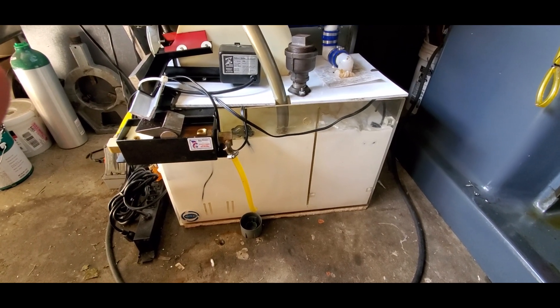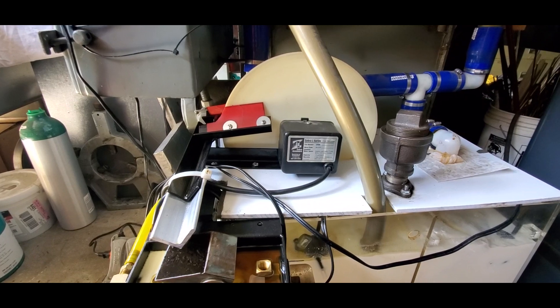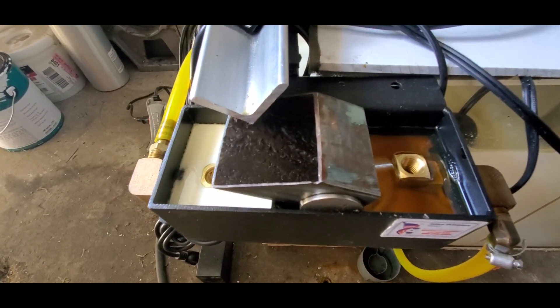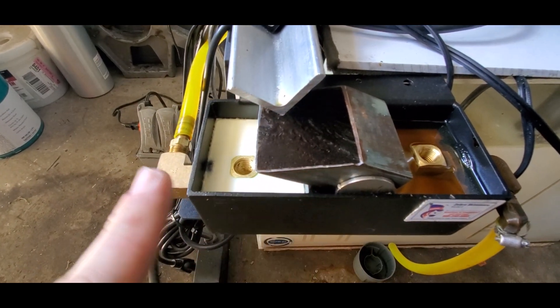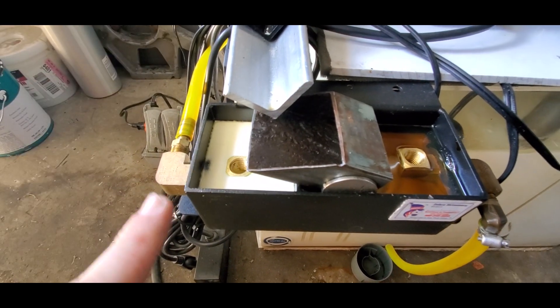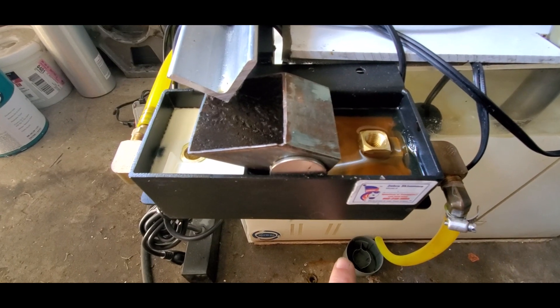To deal with the tramp oil, there's a disc oil skimmer that goes into an oil water separator. Coolant goes this way back to be recycled or returned into the system. And any tramp oil eventually goes out down here.